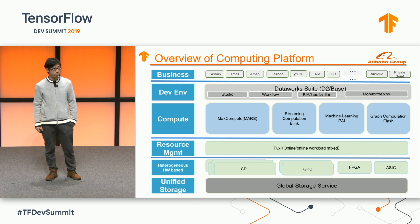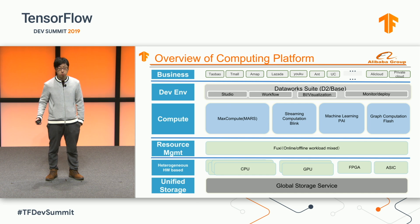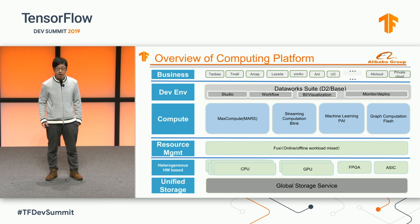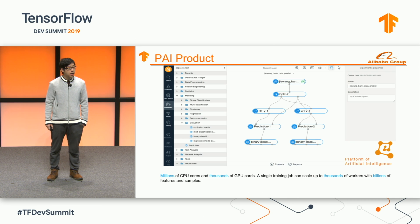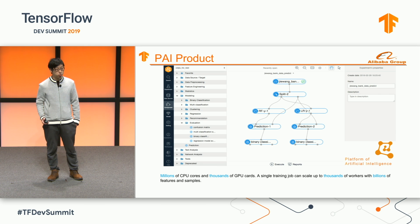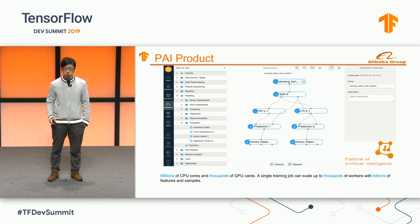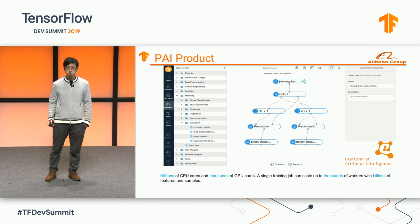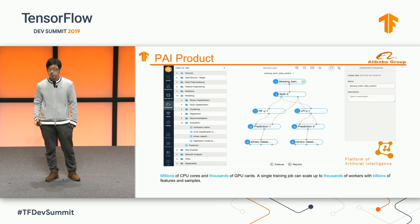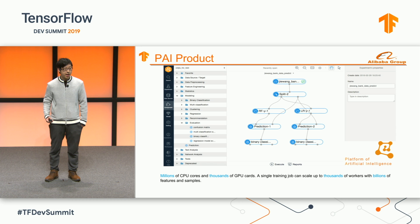This is an overview of our computation platform. We have a global storage system with heterogeneous resources. On top of that, we have uniform resource management to support all different types of computation frameworks, including PAI. Here's a snapshot of the PAI user interface — people can drag and drop components and build workflows very easily. The system runs on top of millions of CPU cores and thousands of GPU cores. Our single training job can scale up to thousands of workers with billions of features and parameters. We also have a public server in Alicloud for external users.